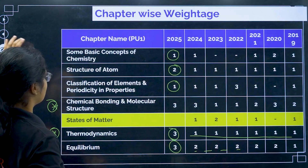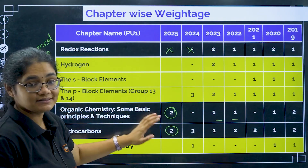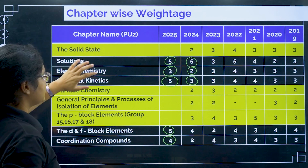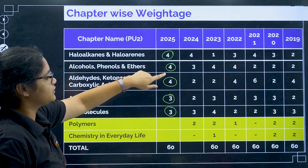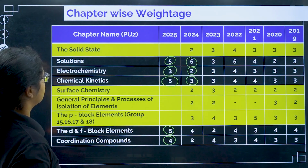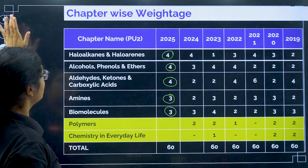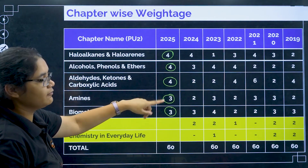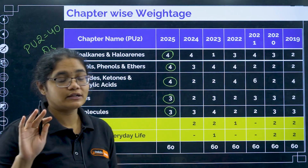Adding these all up: from PU1, we got 17 questions, and from PU2, we got 40 questions, giving a total of 57 questions.